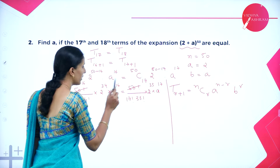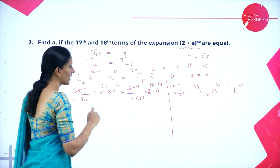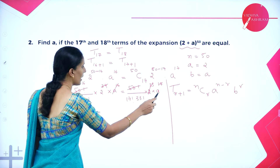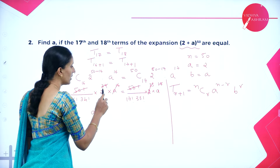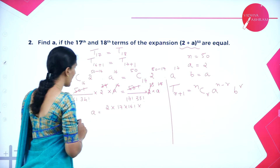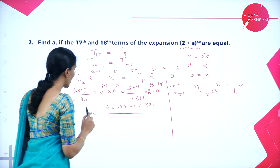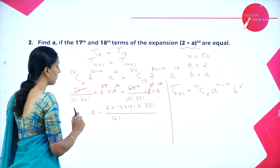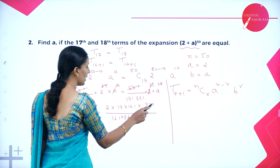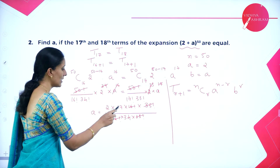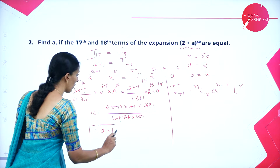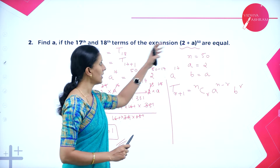Expanding: 50!/(16! · 34!) · 2^34 · a^16 = 50!/(17! · 33!) · 2^33 · a^17. Cancelling 50! on both sides, then cancelling 2^33 and common factorial terms, we write 17! = 17 · 16! and 34! = 34 · 33!. After cancellation, 17 and 34 cancel (since 34 = 2 × 17), giving a = 1.